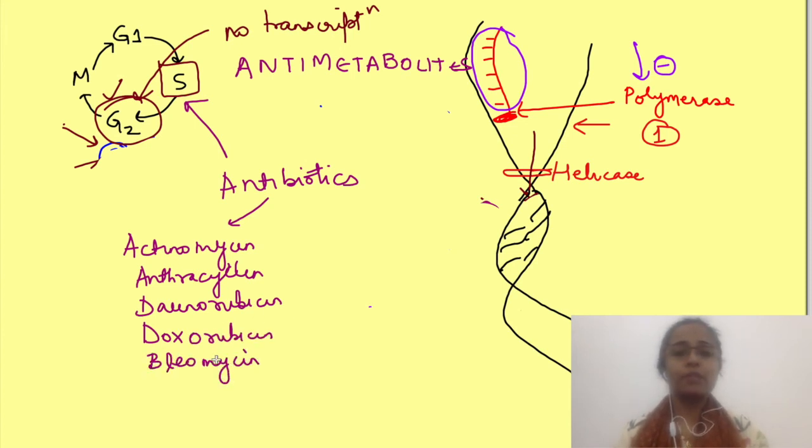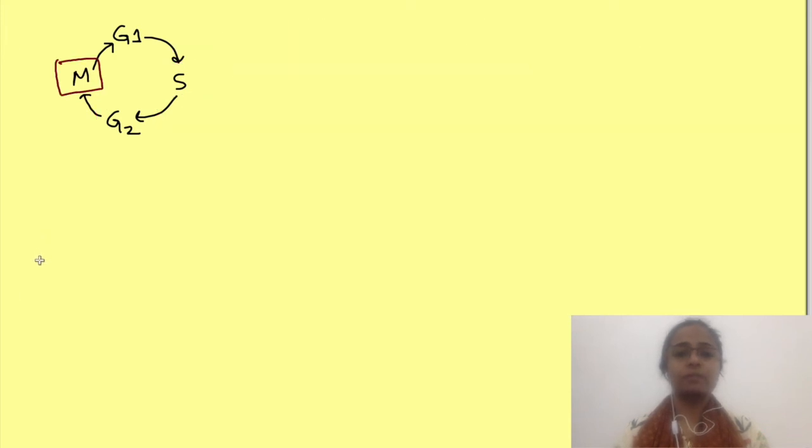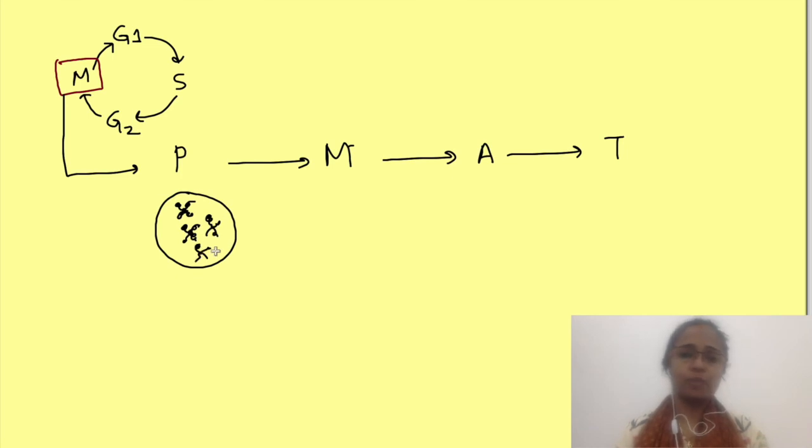Now let's come to drugs which act on mitosis phase. Mitosis consists of 4 phases: prophase, metaphase, anaphase, and telophase. In prophase, condensation of chromosomes occurs.